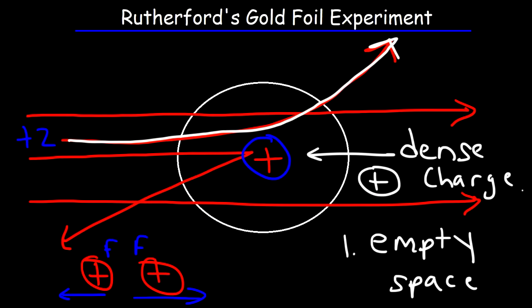To review, he discovered that the atom is mostly empty space due to the fact that many of the alpha particles went straight through the gold foil. But the fact that many of them were deflected at large angles showed that there had to be a very dense center with positive charge known as a nucleus today. That's a summary of Rutherford's gold foil experiment.